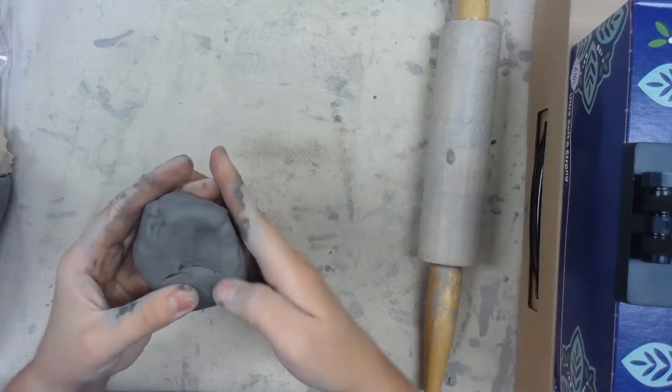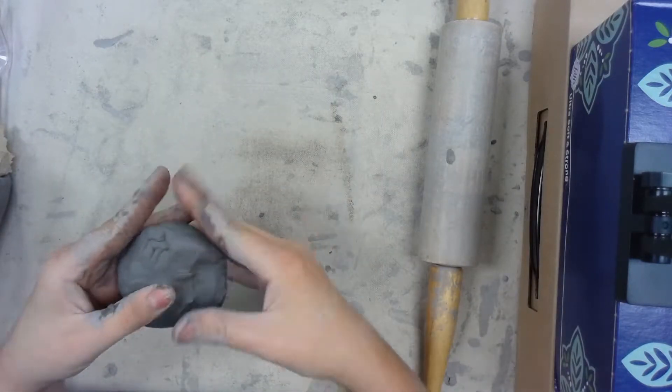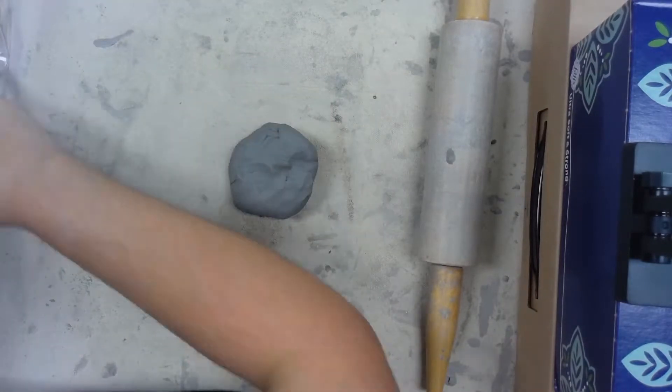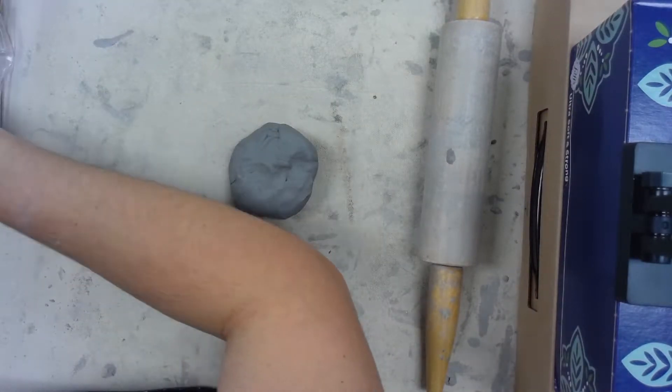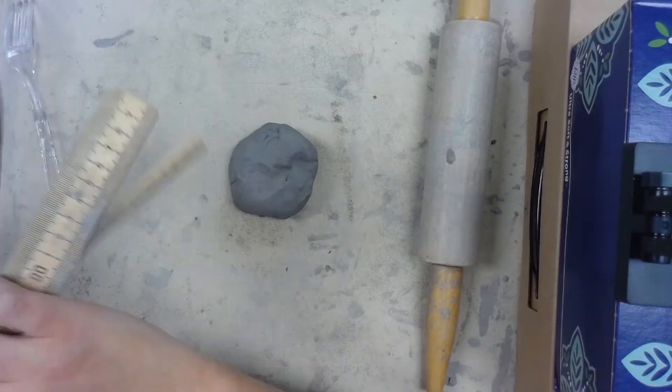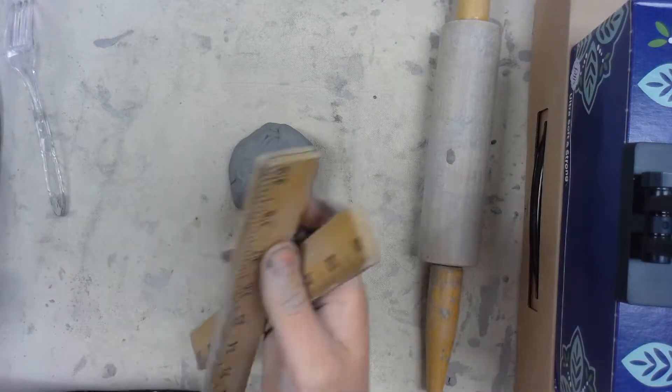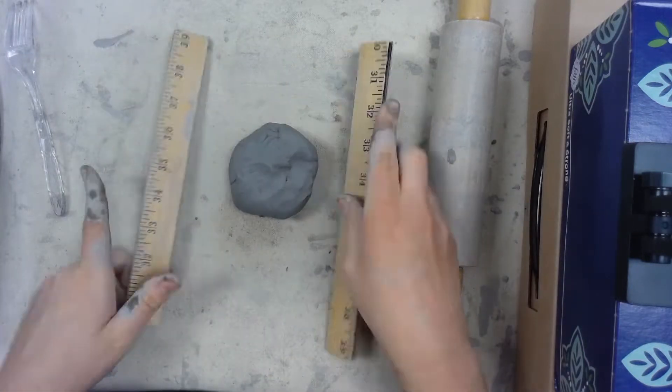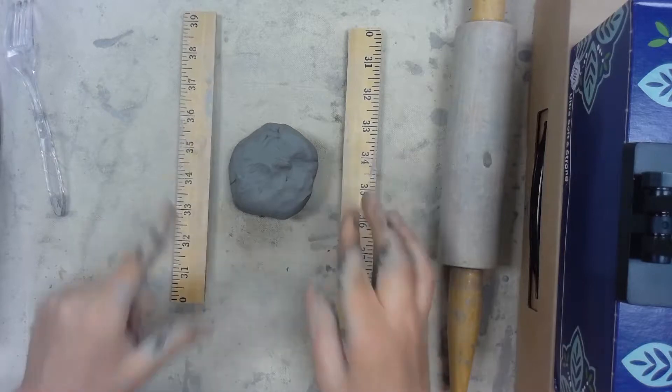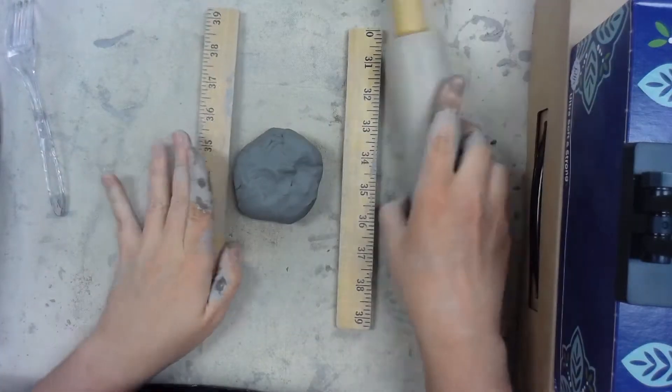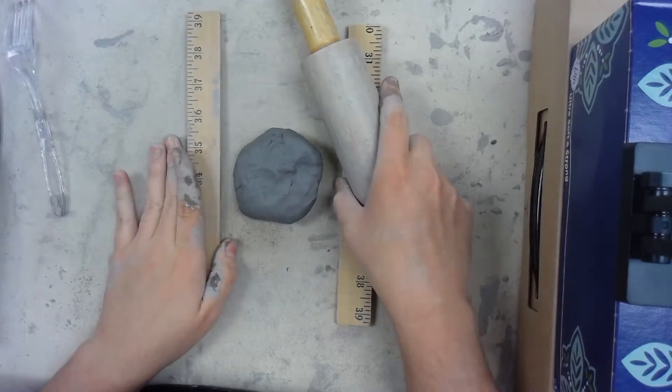I also forgot you'll need your ruler guides. Basically we're making another slab, but this slab is going to be relatively smaller than the last one you probably made for your tube or tunnel of clay that's wrapped around your pop can.